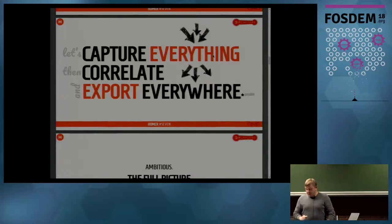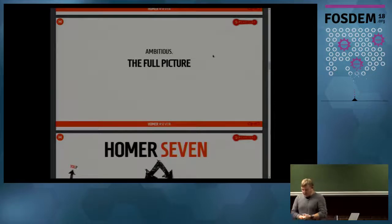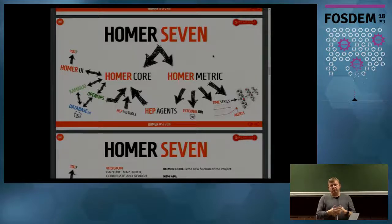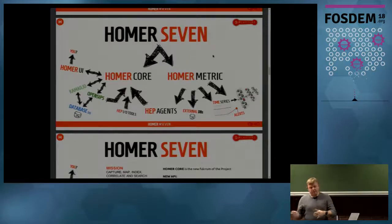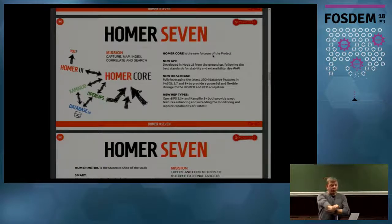The agenda: our goal is to capture everything, correlate, and export everywhere. In the full picture, HOMER 7 is now split into two main components. One component is HOMER Core, and the other is HOMER Matrix. In HOMER Core you see Kamailio, OpenSIPS, writing to the database and UI. HOMER Matrix is where we have statistics that we need to export somewhere. The next section will explain HOMER Core.